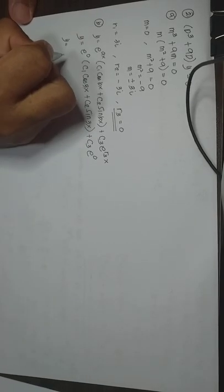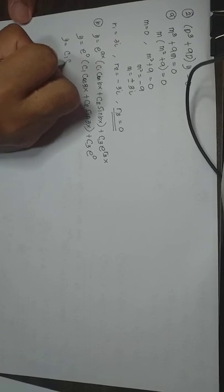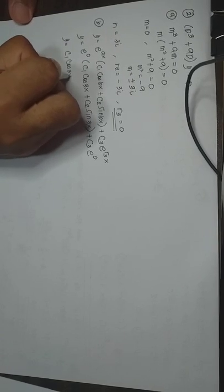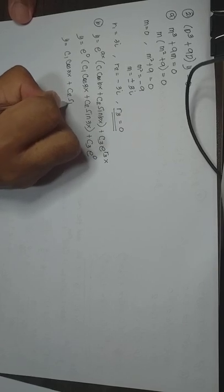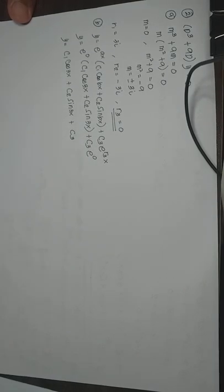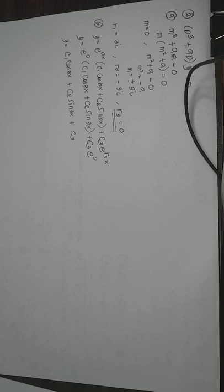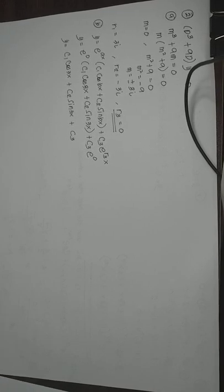Therefore the solution is: E to the 0 is 1, so Y equals C sub 1 cosine 3X plus C sub 2 sine 3X plus C sub 3, since E to the 0 is 1. That answers example number 2 of case number 3.